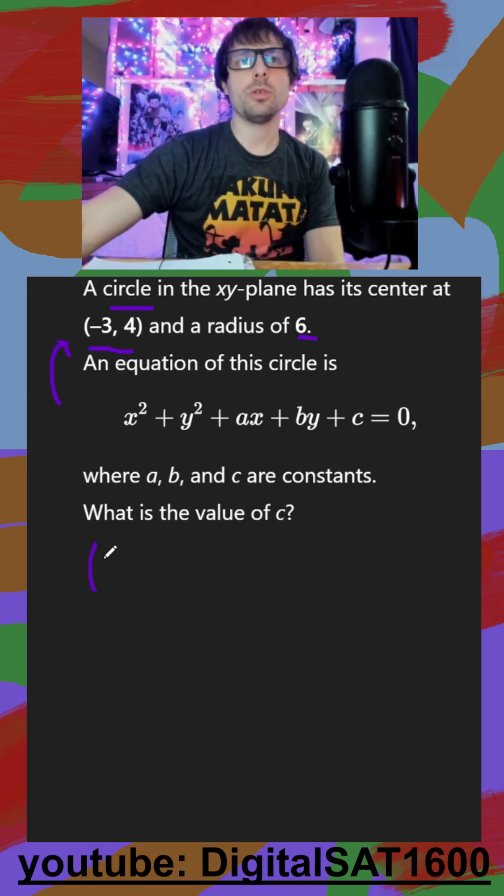So remember, for standard form of a circle, it's going to be the opposite of your center for your x, so it's going to be x plus 3 squared.